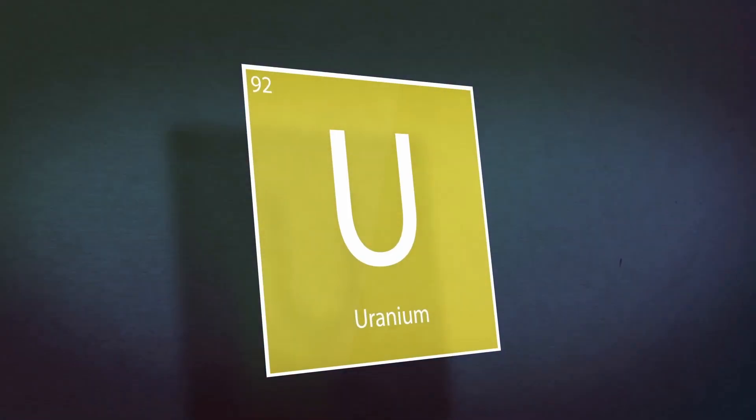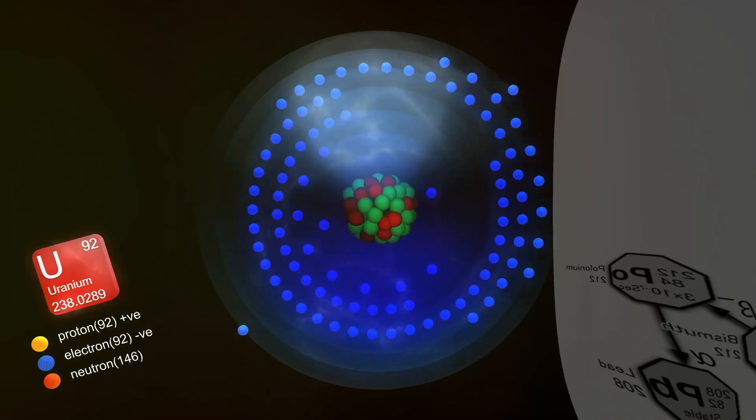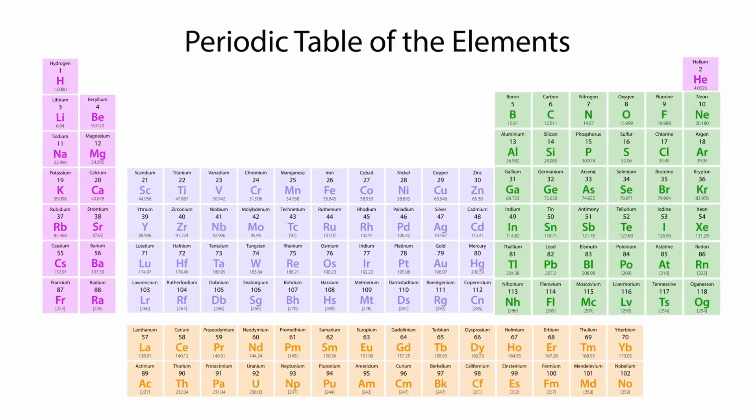Uranium-235, the primary fuel for today's reactors, is fissile, meaning it can sustain a chain reaction on its own. Thorium, however, isn't fissile—it's fertile. To turn thorium into a fuel, it needs to be converted into a fissile material called uranium-233 through a process called breeding.